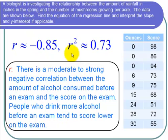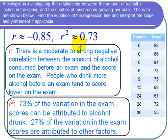So now let's interpret R squared. R squared, which was 0.73, I write that as a percent because it's easier to explain. We can say that 73% of the variation in the exam scores can be attributed to alcohol drunk. The rest, which is 27%, 27% of the variation in the exam scores are attributed to other factors.